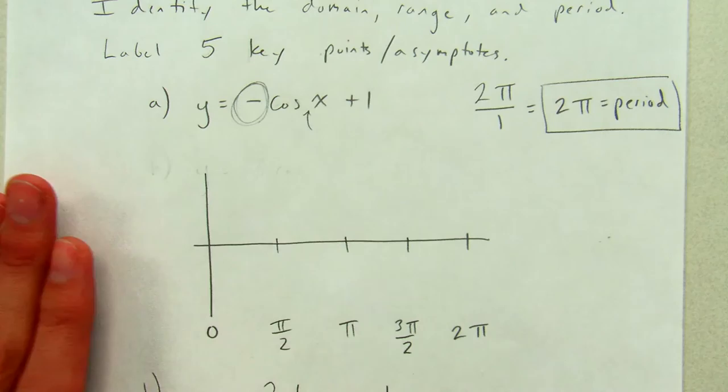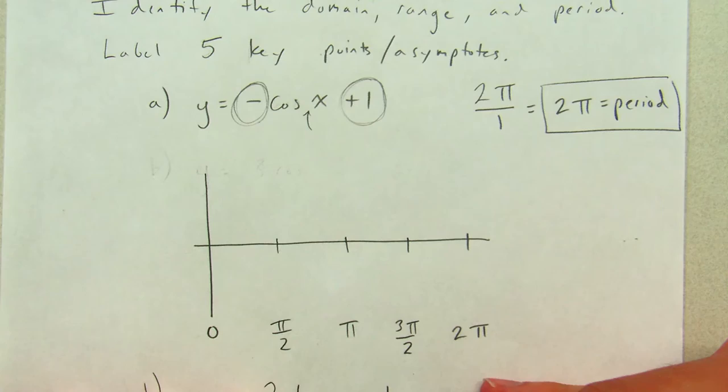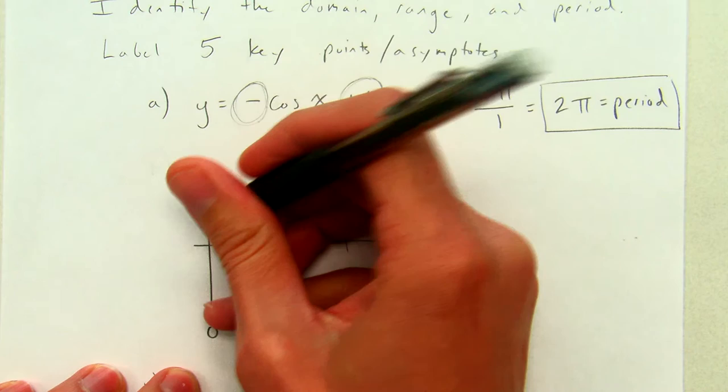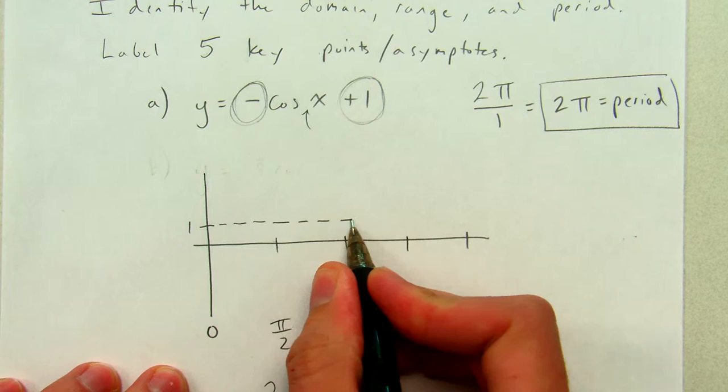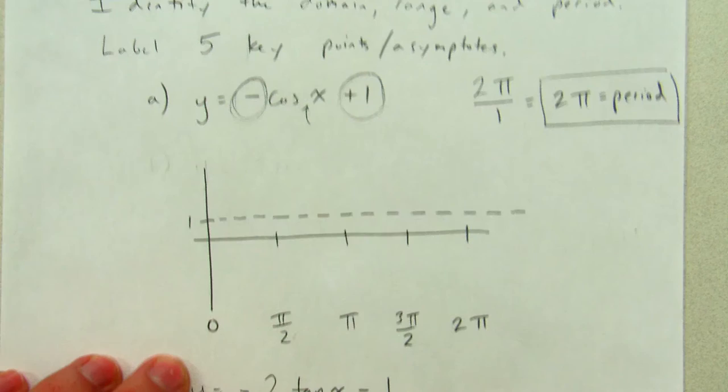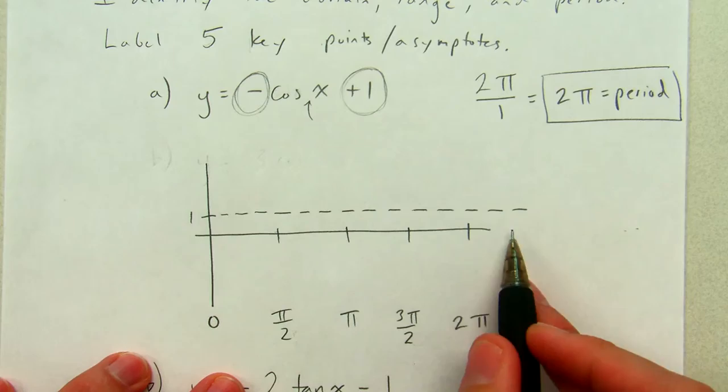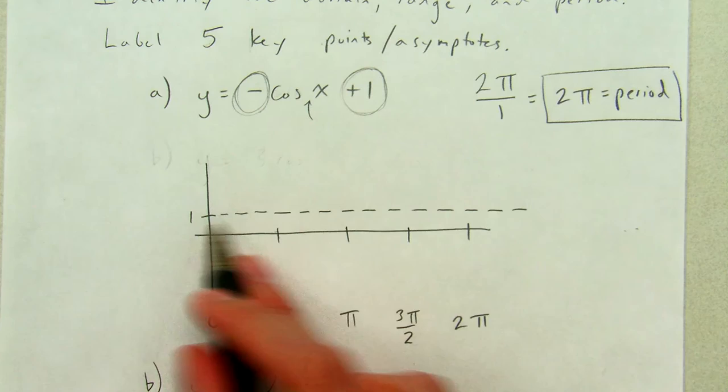Now, a is a negative number here. It's negative one instead of positive one. And I've also got a plus k. I've got plus one, which means the whole graph is going to move up one. Let's start by graphing that midline. At y equals one, that's going to be my midline. I'm going to wish I made that a little bigger, but that's okay. This is kind of like, I'm going to think of this midline like it's the x-axis. I'm going to kind of ignore that line. And I'm going to graph cosine on this midline instead.